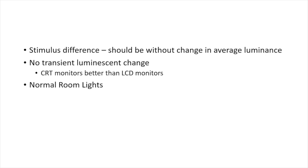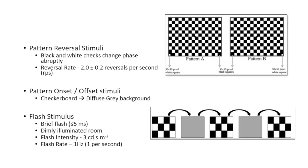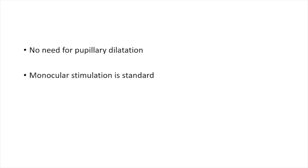An important distinction: for full field ERG, full pupillary dilatation is needed, but for VEP, pupillary dilatation is not required. Monocular stimulation is standard — one eye is patched — though binocular testing can still be done in certain situations or if the patient is not fixing well.